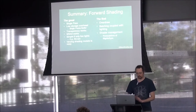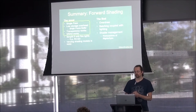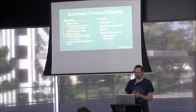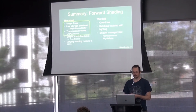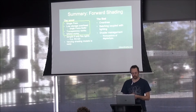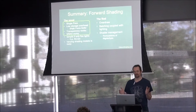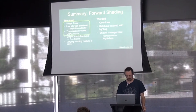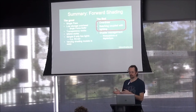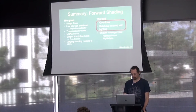The summary of traditional forward shading: good things are that it's a single-pass technique with little overhead, transparency works, and multi-sample anti-aliasing works out of the box. If you don't have a lot of lights, this is great — but that's not the point of this talk. The bad things are overdraw — drawing a triangle over something you've already computed expensive shading for — and the problem of batching being coupled with light assignment.